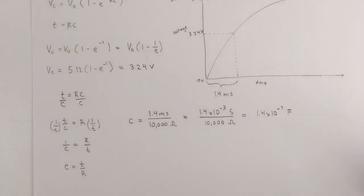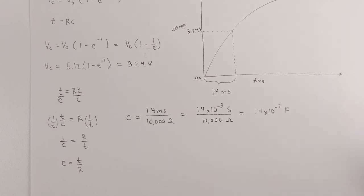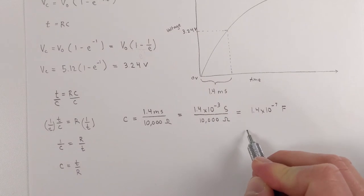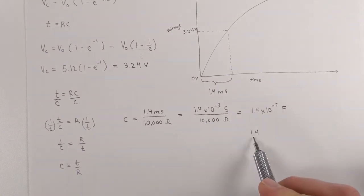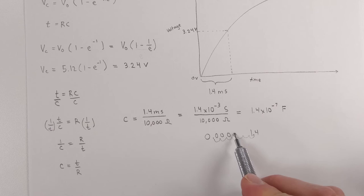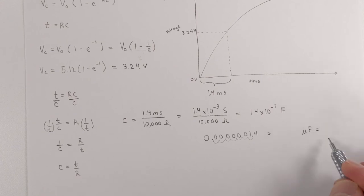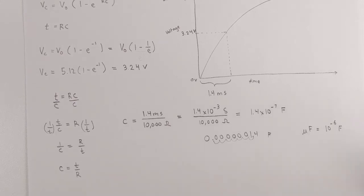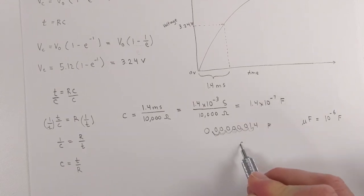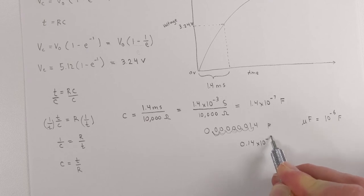Okay, that's what the capacitor is at. Now we want to get that in microfarads, so we're going to need to change it up a bit. So this number right here is 1 farad. Now a microfarad is equal to 10 to the negative 6 farads. So we want to put it in that form, so we go 1, 2, 3, 4, 5, 6. So 0.14 times 10 to the negative 6 farads.